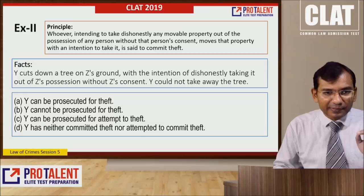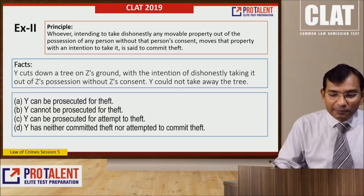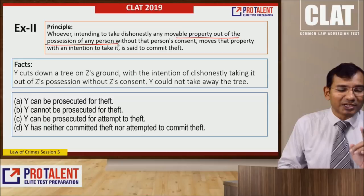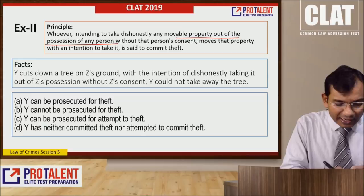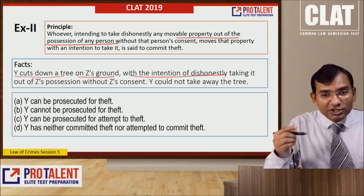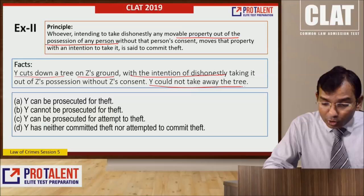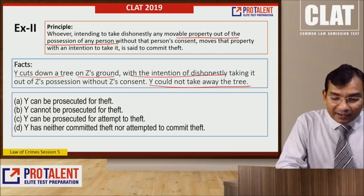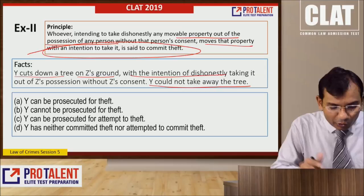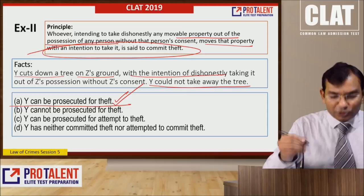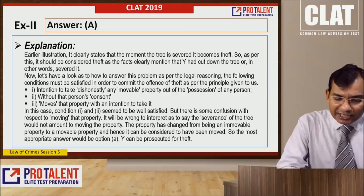Example number 2 principle: whoever intending to take dishonestly any movable property out of the possession of any person, without that person's consent, moves that property with the intention to take it — is said to commit theft. Fact: Y cuts down a tree on Z's ground with the intention of dishonestly taking it out of Z's possession without Z's consent. Y could not take away the tree, but the principle says 'moves that property with an intention to take it.' As soon as Y cut the tree, his intention became clear — therefore Y can be prosecuted for theft. Answer: A. The moment the tree is severed, it becomes theft.